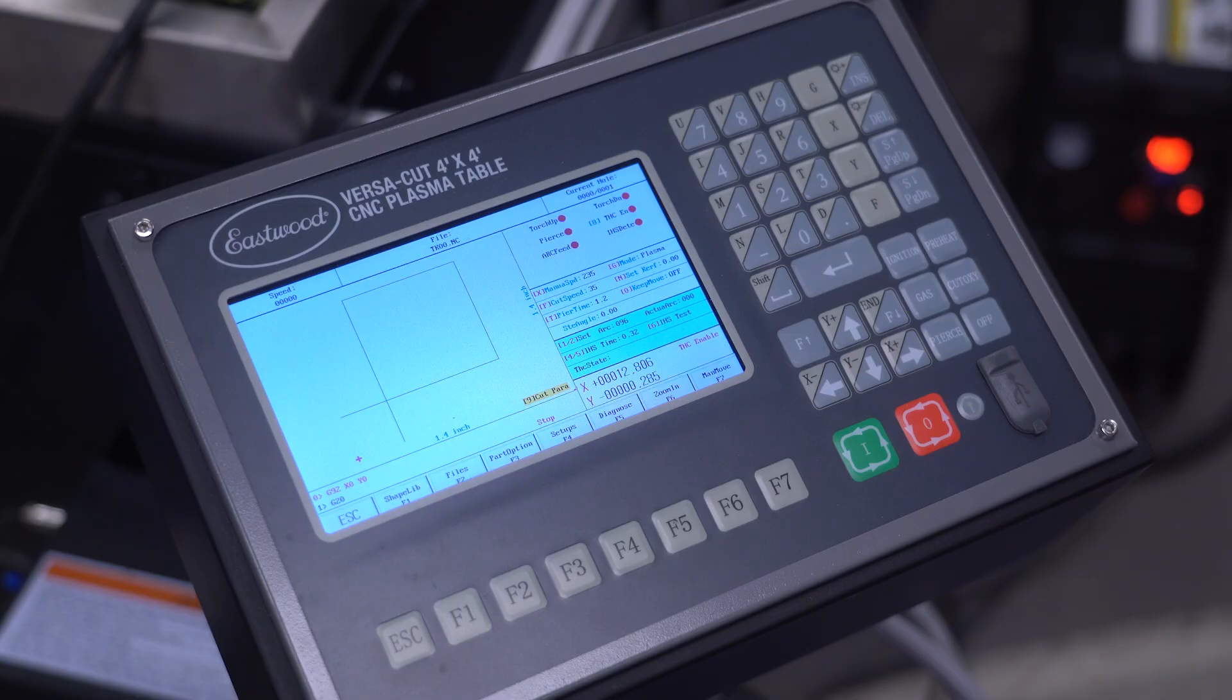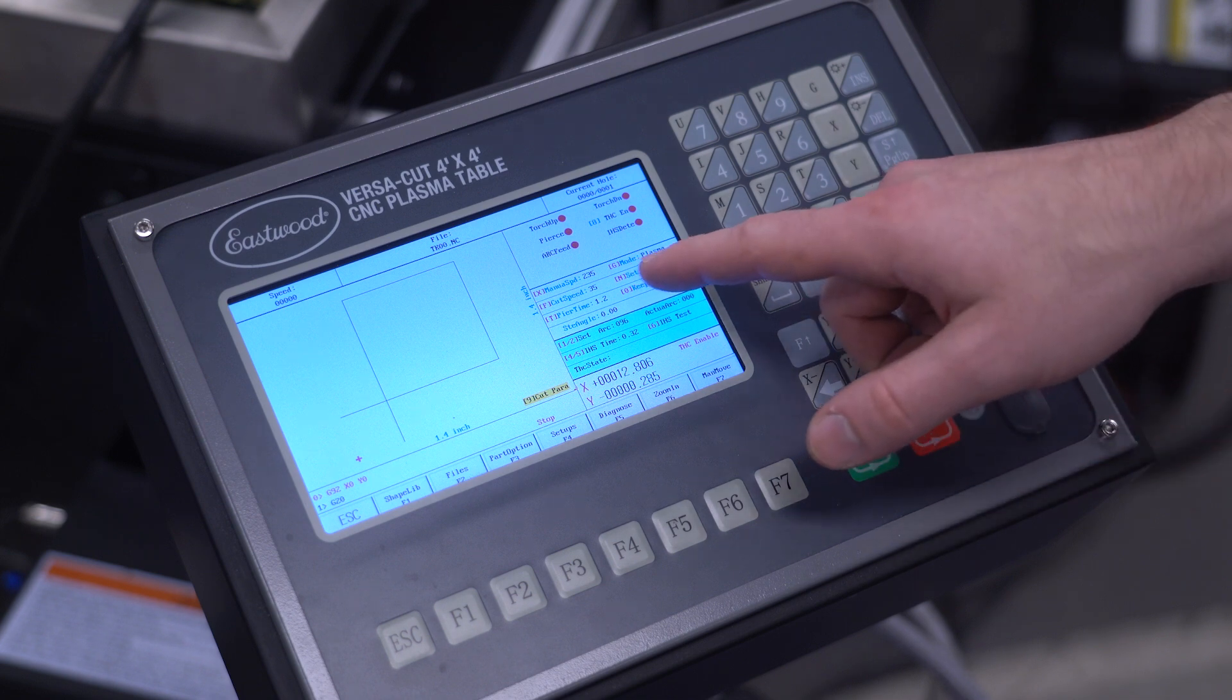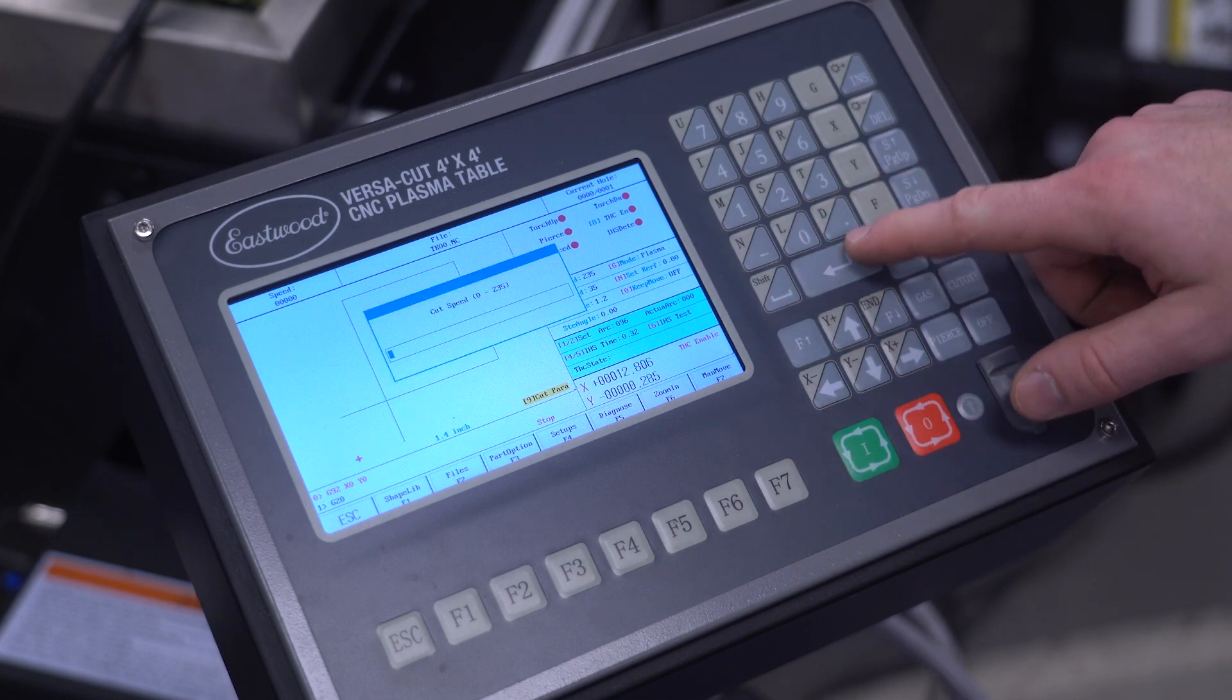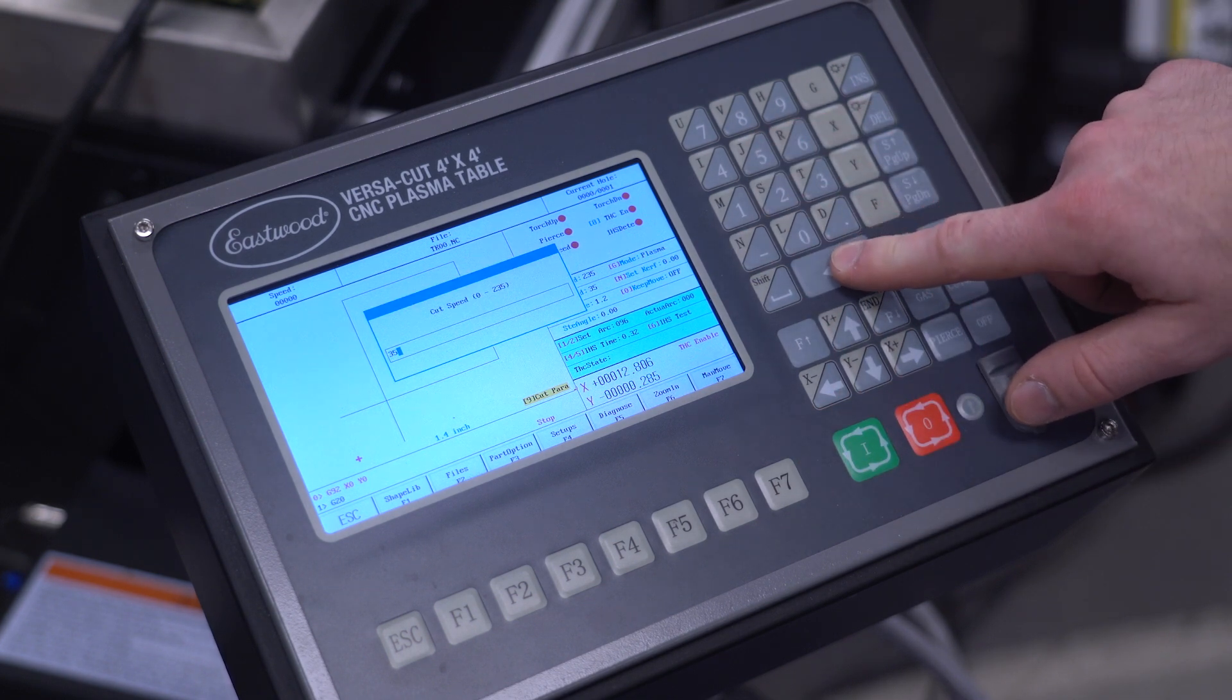On the plasma table some of the most important variables are right here on the main cutting screen. Cut speed and pierce time are crucial. When cutting thick material we need to slow down the torch and extend the pierce time to get a full cut. Check the reference table for your plasma cutter. With our VersaCut 40 CNC here I want to be around 35 inches per minute and a 1.2 second pierce time.